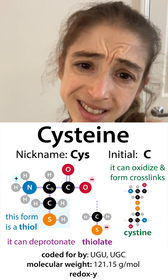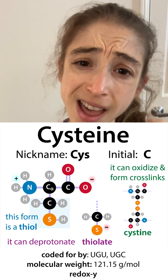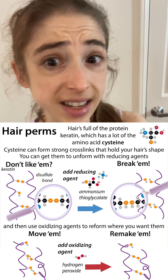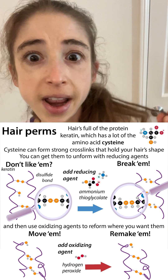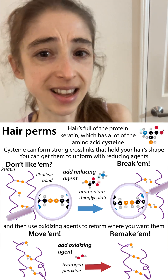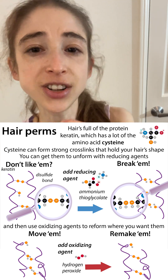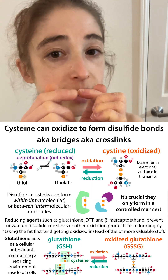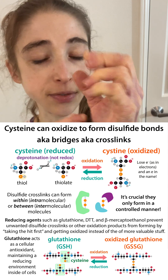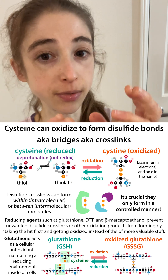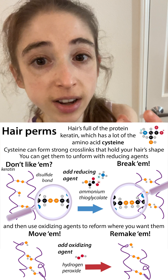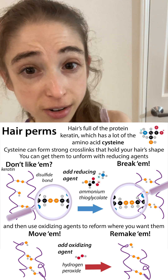Got curls? You've got cysteine to thank for that. The amino acid cysteine is abundant in keratin, which is abundant in our hair and our nails. Cysteine has this cool property where it can actually form these strong covalent crosslinks between cysteine residues at different places in a protein or between different proteins, such as between different strands of keratin in your hair.